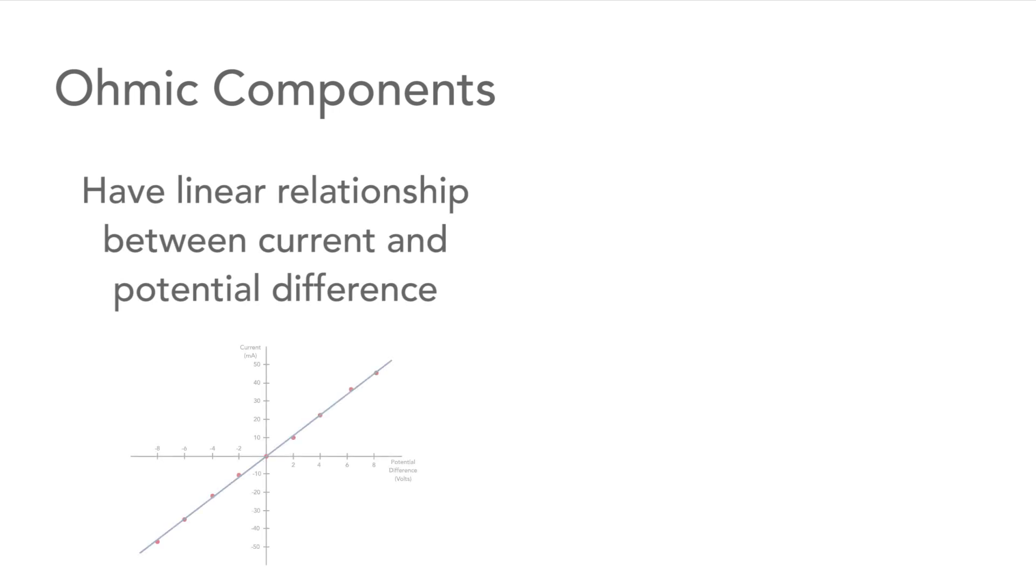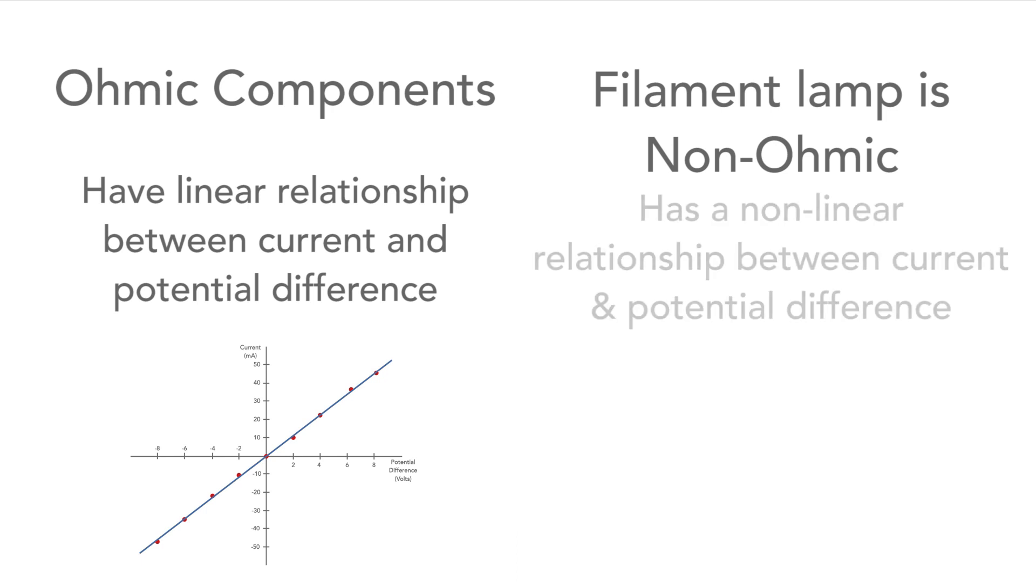In this video, we have seen that some components are ohmic and have a linear relationship between current and potential difference. But a filament lamp changes its resistance as the potential increases. It has a non-linear relationship between current and potential difference, and it is said to be non-ohmic.